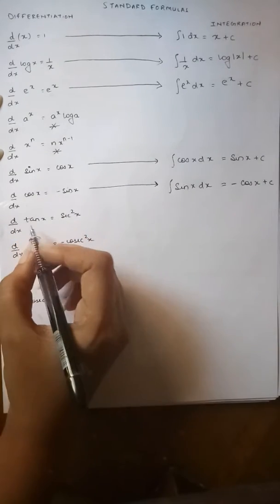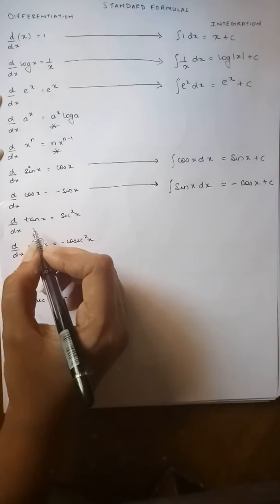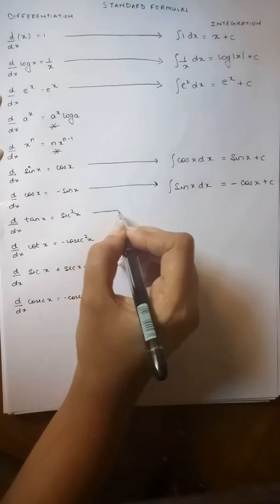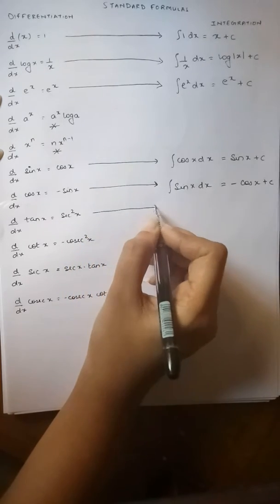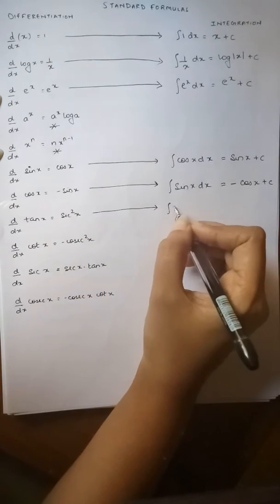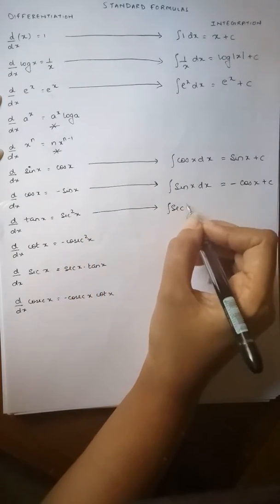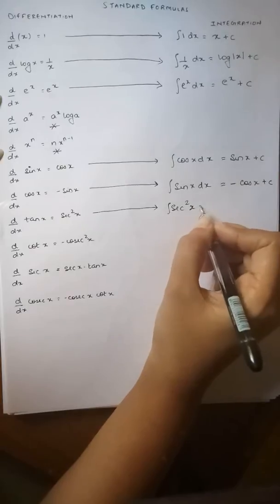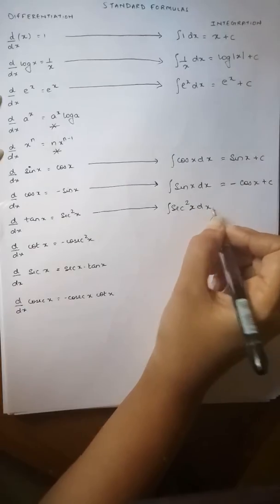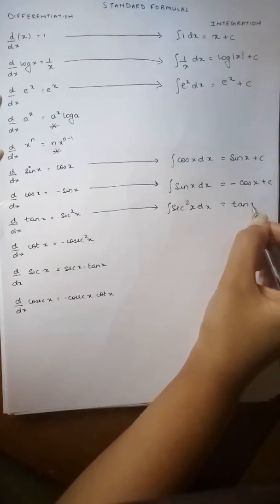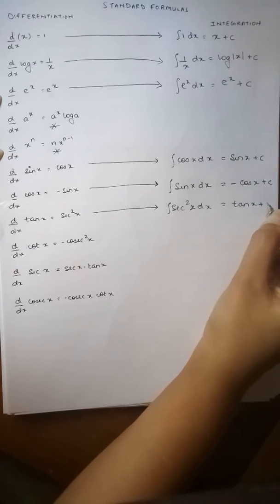Similarly, differentiation of tan x with respect to x gives us sec squared x. Therefore integration of sec squared x with respect to x will give us tan x plus c.